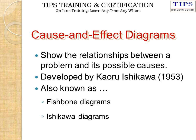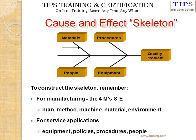Next we will study the Cause and Effect Diagram, which shows the relations between problems and their possible causes. This was developed by Kaoru Ishikawa and is also known as the Fish Bone Diagram and Ishikawa Diagram. In the schematic, the point of intersection on the horizontal line represents the quality problem, with arrows showing contributions from Material, Procedure, People, and Equipment.